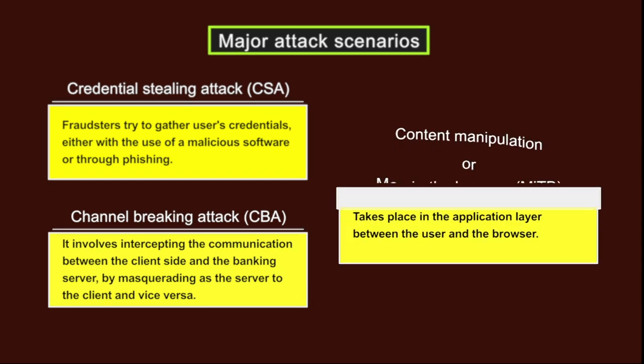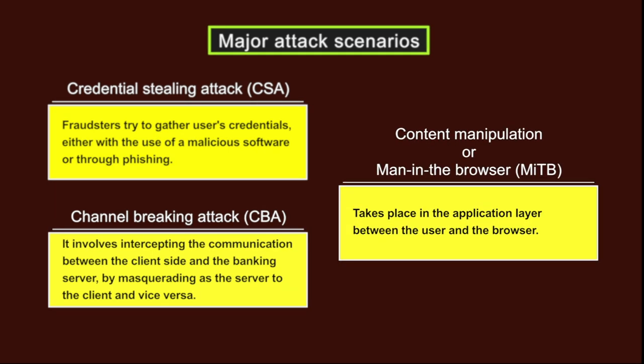The third attack scenario is content manipulation, also called man-in-the-browser attack, which takes place in the application layer between the user and the browser. The adversary is granted with privileges to read, write, change and delete the browser's data while the user is unaware about it.